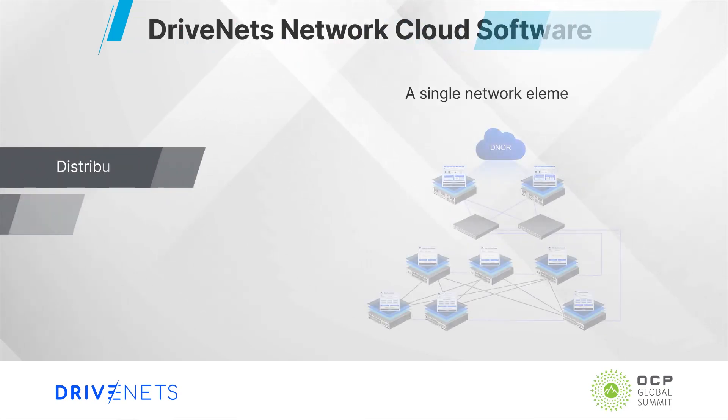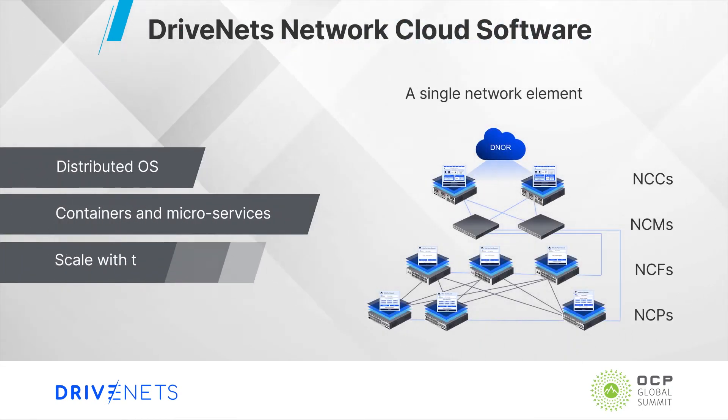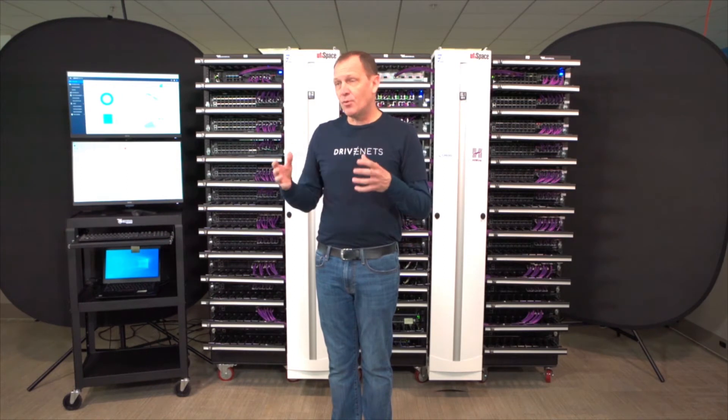Now let's talk about the software. The software that powers this demonstration behind me is the Drivenets Network Cloud. It creates operational simplicity out of hardware complexity. The Drivenets Network Cloud consists of the Drivenets Network Operating System, or D-NOS, and the Drivenets Network Orchestrator, or D-NOR. It is a clean sheet design system of software built to support all the way from a single box through the 96TB version behind me, as well as systems up to 192TB. It's distributed software based on containers and microservices, and allows scale as you add hardware elements to the system. Most importantly, it creates operational simplicity for both the network and the operator by making this collection of hardware behind me look like a single network element — a single router in your network.